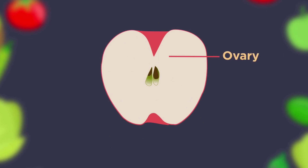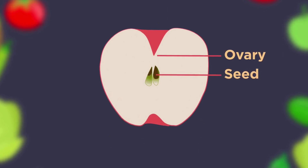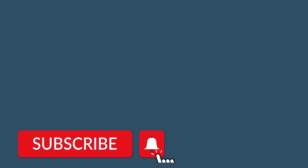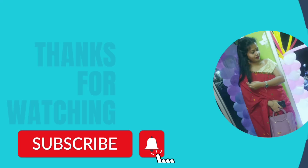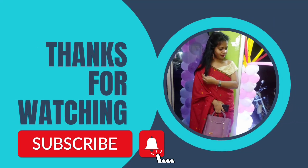This fruit and seed can be dispersed in many ways — by wind, by water, and also by animals. Seed dispersal and germination will be discussed in the next video. Thank you for watching.